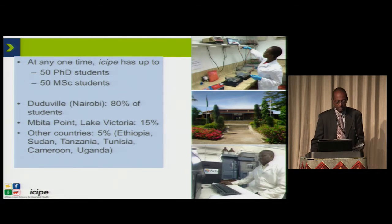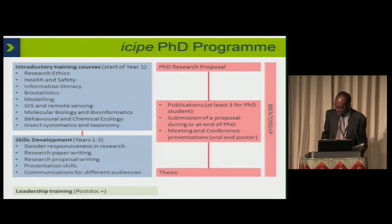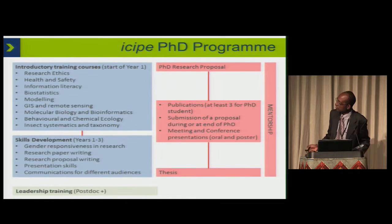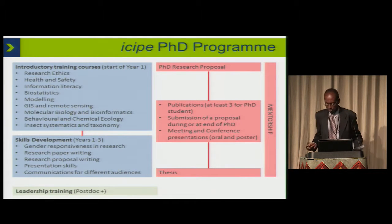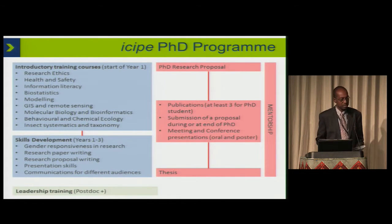We have about 50 PhD students and 50 MSc students at any one time — most of them in Nairobi, but quite a large number in Western Kenya where we have our second campus and in other countries as well. In the first year, we have a number of introductory training courses which are very generic, and over the three to three-and-a-half years that students are in residence, they also learn research proposal writing, presentation skills, and communication. They write a thesis and are expected to publish their work under the supervision of a university supervisor, because ICIPE does not award degrees, and some mentorship within and without ICIPE.